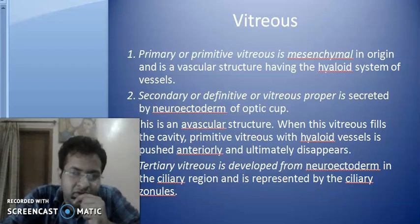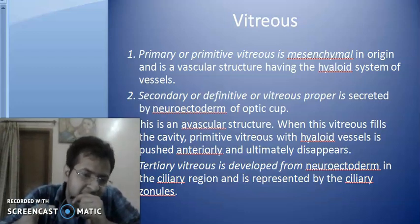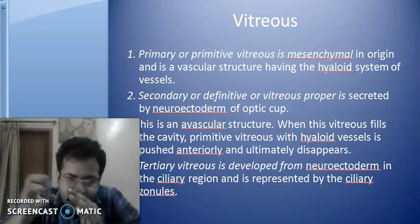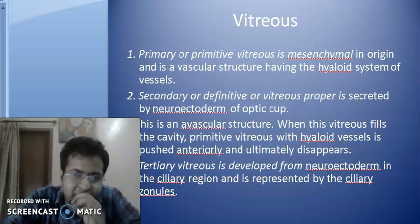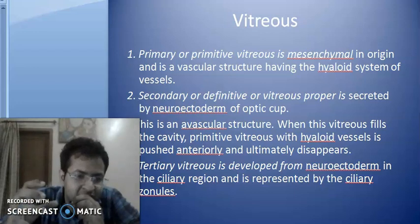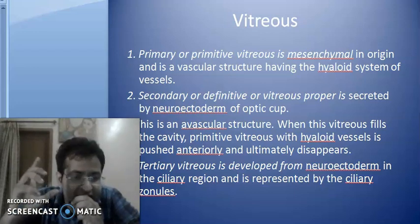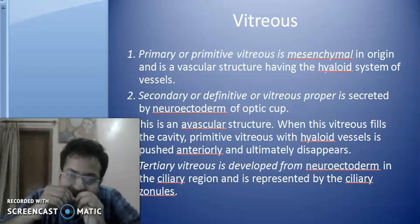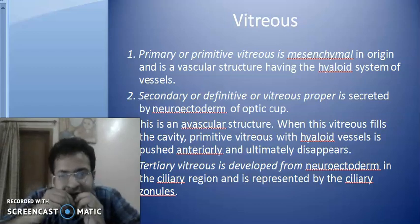What is the Primary or Premature Vitreous? It is mesenchymal in origin. The vascular mesenchyme which has invaded between the lens vesicle and the optic cup forms the Primary Vitreous. It is mesenchymal in origin and hence it is a vascular structure having the hyaloid system of vessels. The initial vascular mesenchyme is responsible for the formation of the Primary Vitreous.